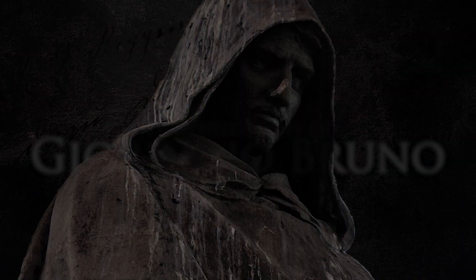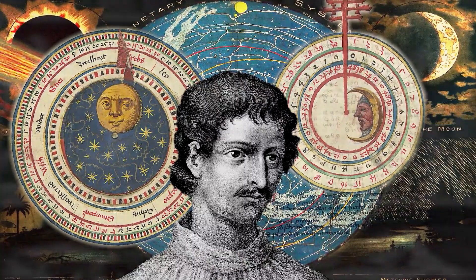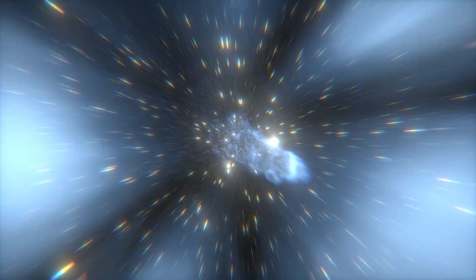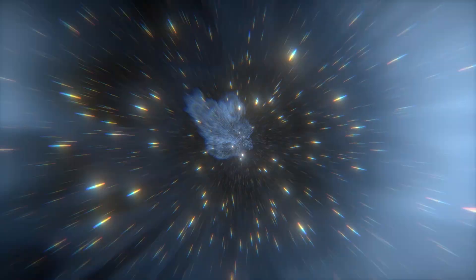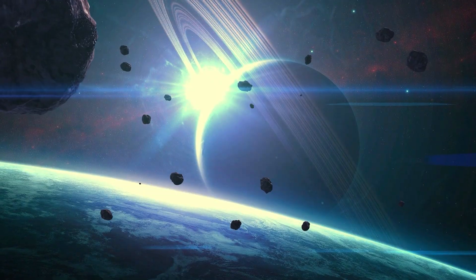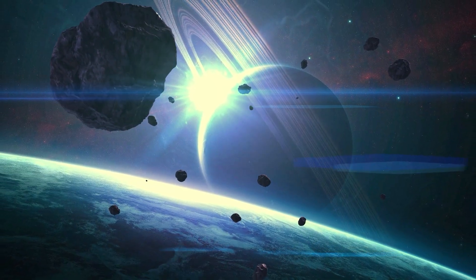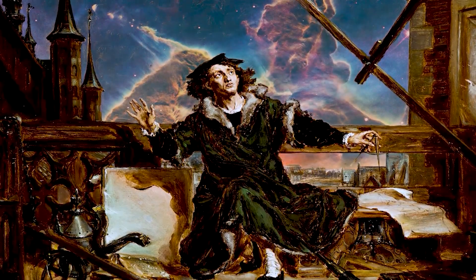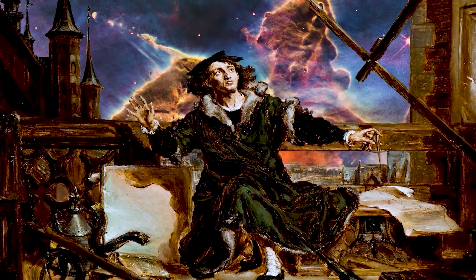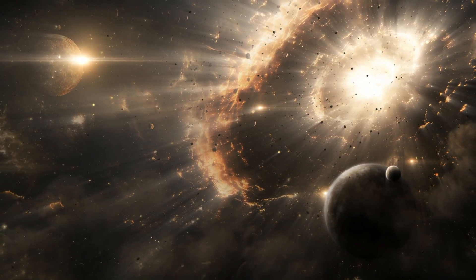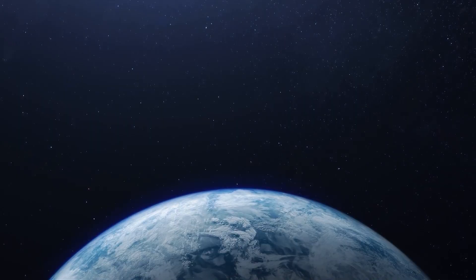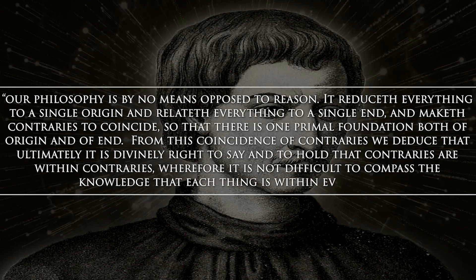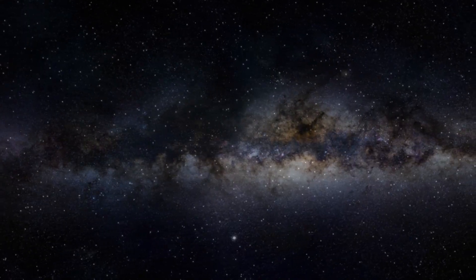Centuries later, in Renaissance Europe, the philosopher Giordano Bruno gave new voice to this dangerous idea. He proclaimed that every star was a distant sun, orbited by planets of its own. He declared the cosmos infinite, populated with innumerable worlds, each no less real than ours. Such thoughts defied the established order. For his refusal to remain silent, Bruno was condemned and burned alive in 1600. Yet his words survived, scattering like sparks into the centuries that followed.